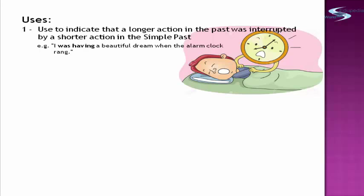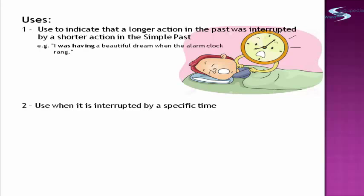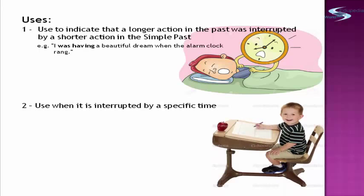Remember, the phrase 'was having' is in the past progressive tense. The second usage is when it is interrupted by a specific time. 'Yesterday, at this time, I was sitting at my desk at school.' Remember that the phrase 'was sitting' is in the past progressive tense, and it has been interrupted by a specific time: yesterday, at this time.